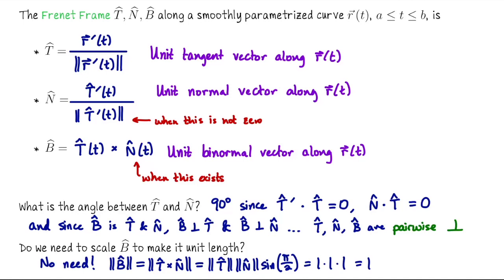Once we have those two vectors, they are unit length and pairwise orthogonal, which means that when we compute the cross product T-hat cross N-hat, that defines another unit length vector which is also orthogonal to the other two, and that is our unit binormal vector.